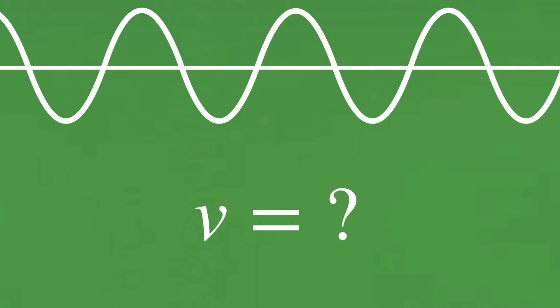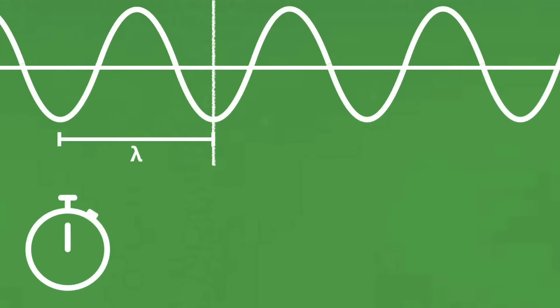Well, we already have a really simple equation for velocity, don't we? For constant velocity, we can just do distance traveled divided by the time taken to travel that distance. So we can use that idea for waves too. The important thing is that we choose the distance and the time carefully.